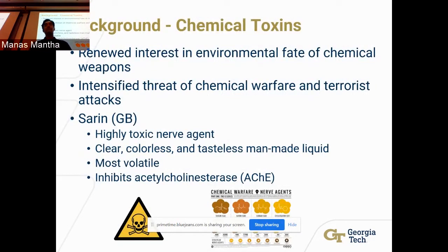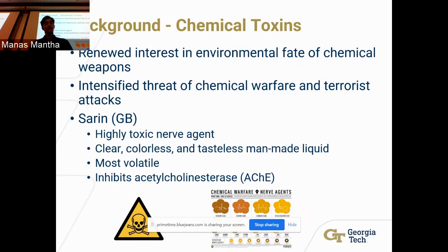There's been a lot of renewed interest in the environmental fate of chemical weapons, driven by an intensified threat of chemical warfare and terrorist attacks. One such toxin we'll be investigating is sarin gas, also called GB. Sarin is a highly toxic nerve agent — clear, colorless, tasteless, a man-made liquid, and the most volatile of all the G agents, meaning it evaporates into the atmosphere much more easily than any other G agent, making it more reactive and dangerous as people inhale it.